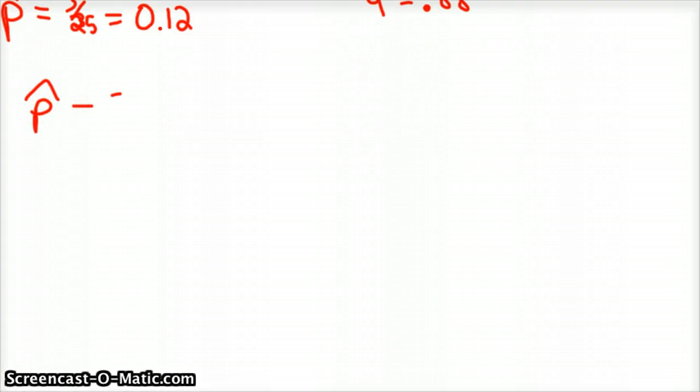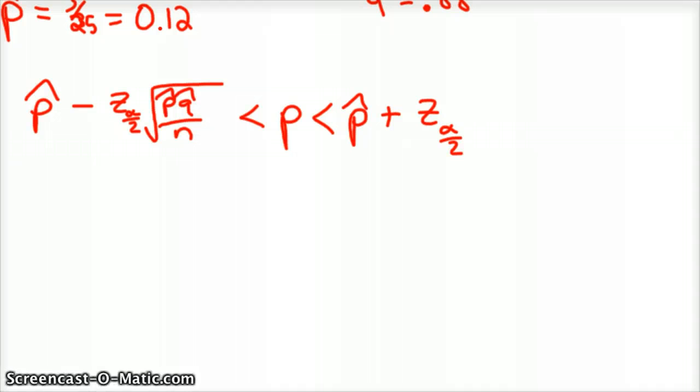P hat minus Z alpha divided by 2, so we're back to a Z score, times the square root of P hat Q hat, all divided by N. And this is less than your population proportion, is less than your sample proportion, plus your Z score, alpha divided by 2, square root of P hat Q hat, all divided by N. So it should look very similar to any confidence interval we've done.